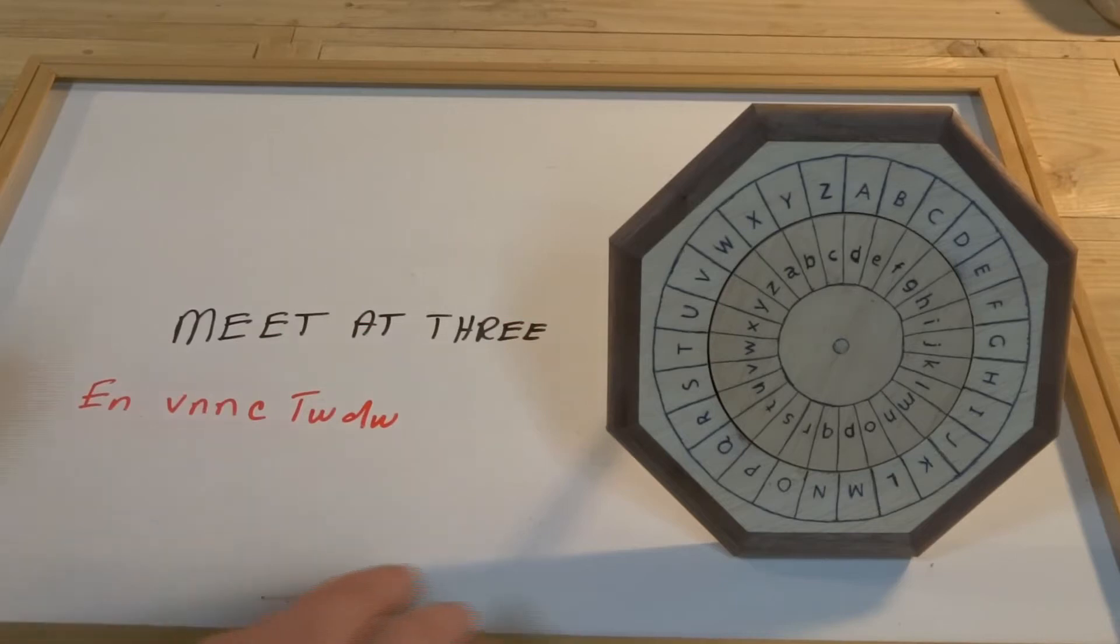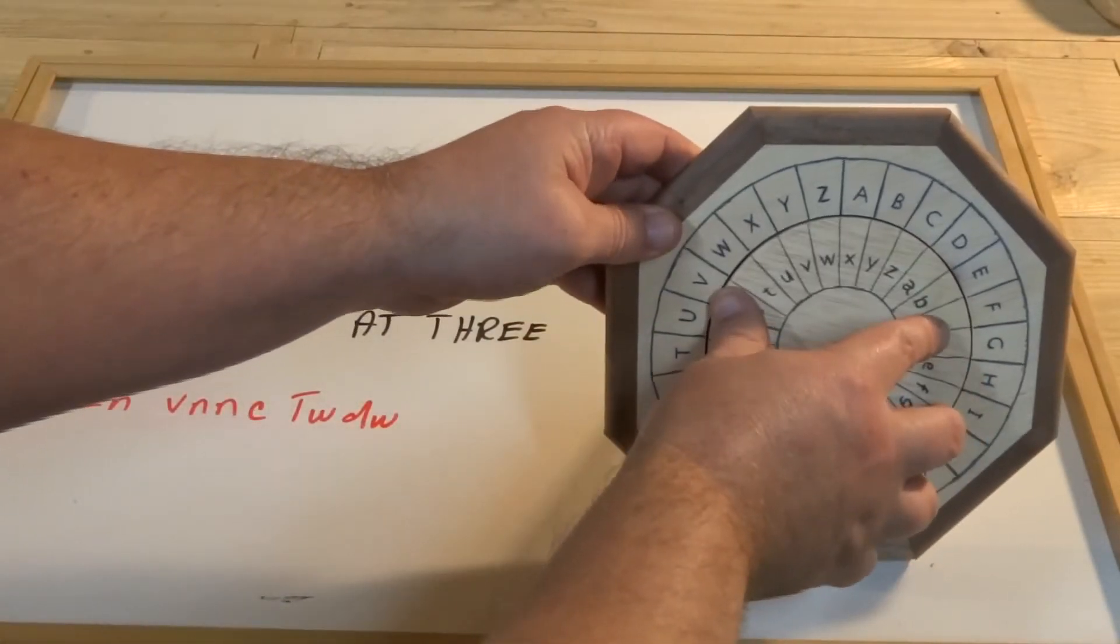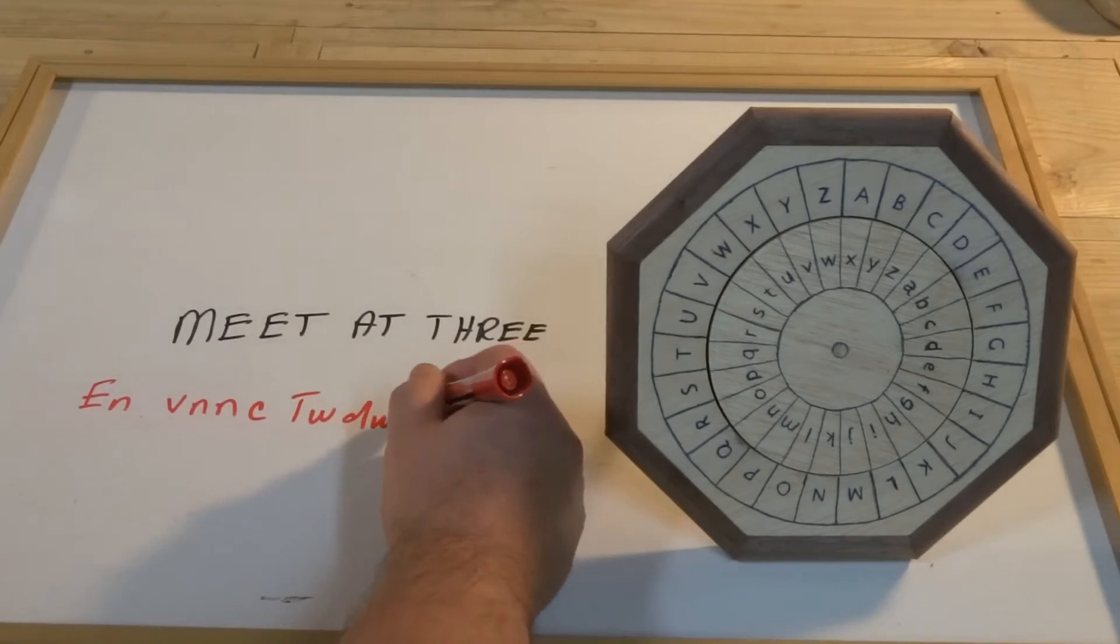And then, we can turn the wheel again to encode our last word. And how about if we use Z and W? So we write that down.